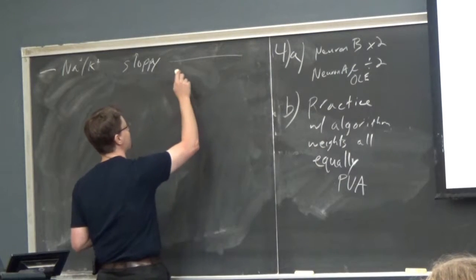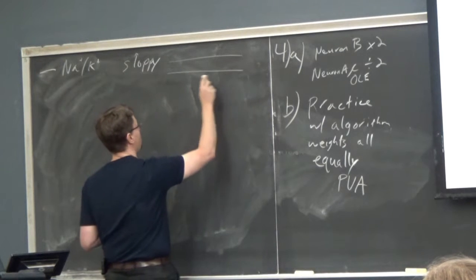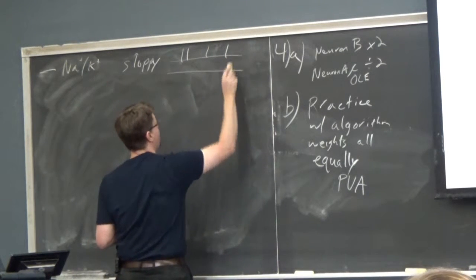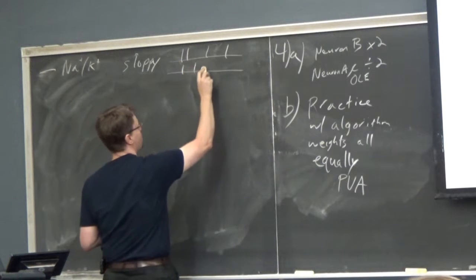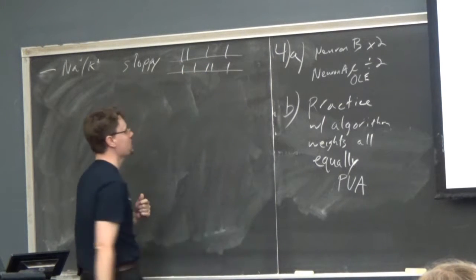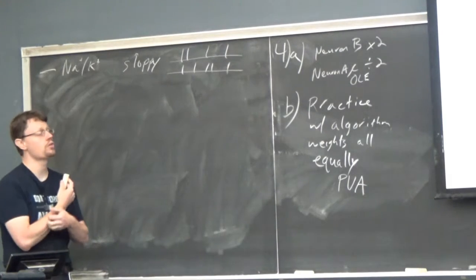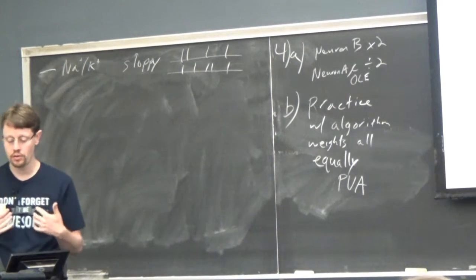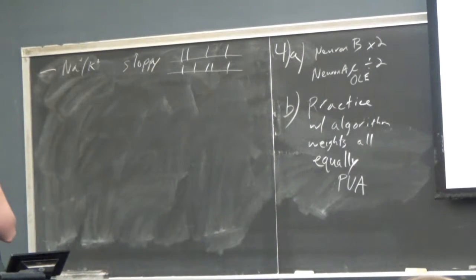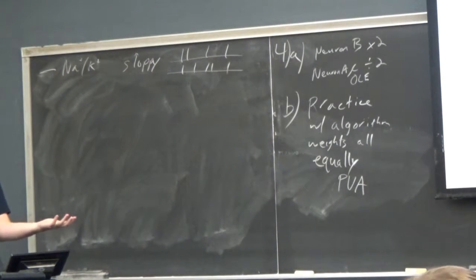If you give the same exact stimulus to a sensory neuron two times, one time you might get this pattern of responses, the next time you might get that pattern of responses. There's maybe some common features that occur with some regularity across multiple demonstrations and that's how we can perceive anything.